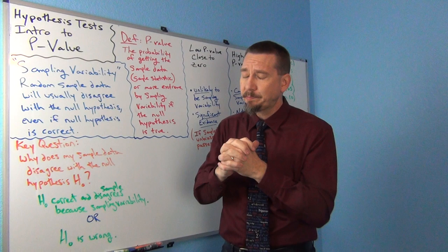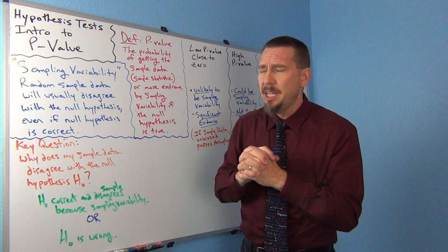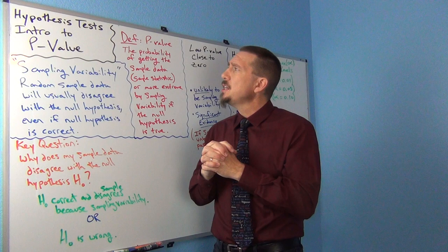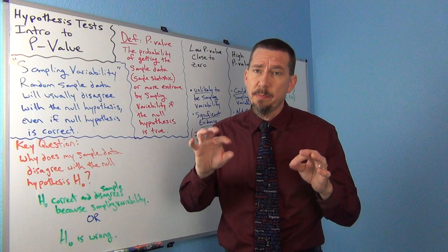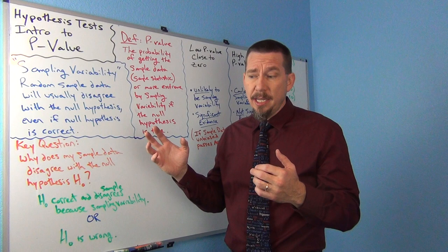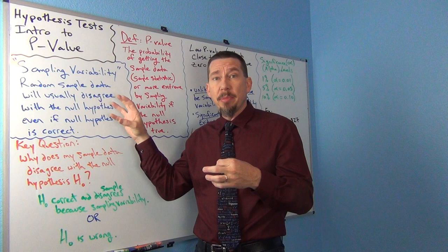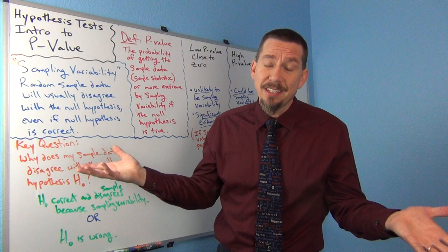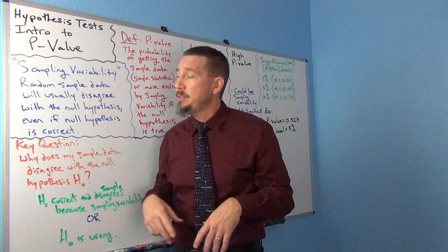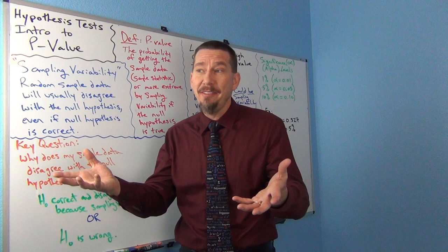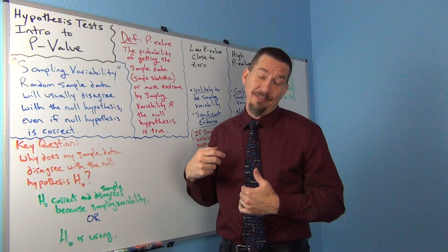Is it a significant disagreement? P-value is another piece of the puzzle. It goes with the test statistic but answers a different question. One thing we talked about last time was this principle of sampling variability — a constant principle throughout our class — the idea that random samples are almost always different and usually different from the population. In terms of a hypothesis test, we can expect our random sample data to almost always disagree with the null hypothesis.